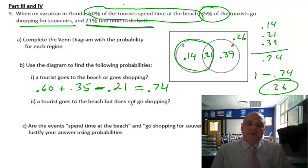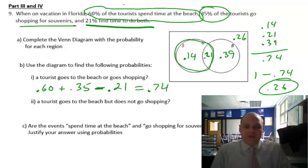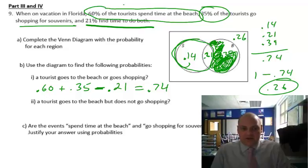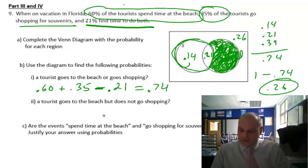A tourist goes to the beach but does not go shopping. Beach but not shopping has to be outside the shopping circle. That region is 0.39 — the beach-only portion. That was 0.39.